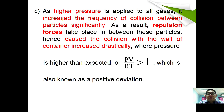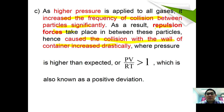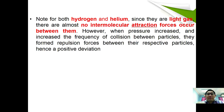At even higher pressure, repulsion forces take place between particles, increasing the frequency of collisions with the container wall drastically, so pressure is higher than expected — pV/RT is greater than 1, exhibiting positive deviation. For helium and hydrogen, being light gases with almost no intermolecular attraction forces, increasing pressure only leads to repulsion between particles, so they exhibit only positive deviation.